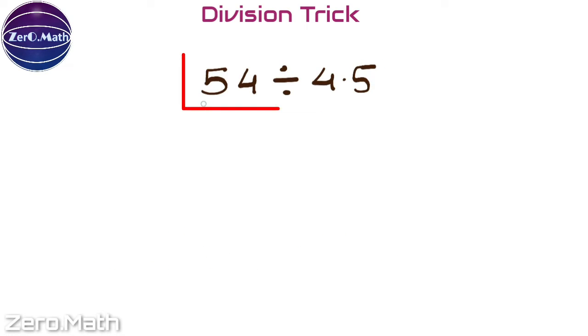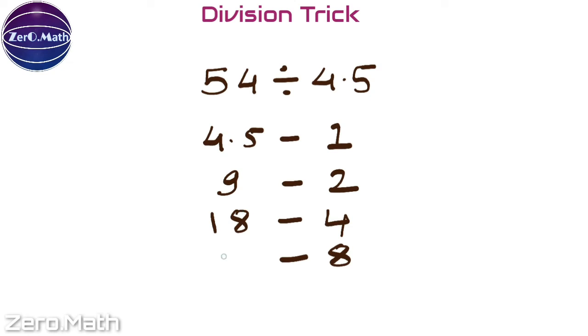Let us quickly divide 54 by 4.5. Here, 4.5 equals 1 unit. What is the value of 2 units? It will be 9. What is the value of 4 units? It will be 18. What is the value of 8 units? It is 18 times 2, which is 36. And what is the value of 10 units? 9 times 5, which equals 45.